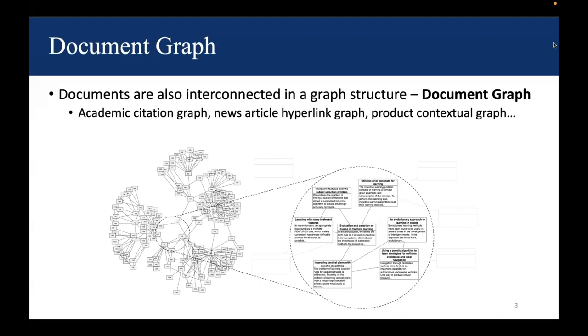Below is an illustration of academic citation graph. Each vertex on the graph is an academic paper, which is a document. If one paper cites the other, we draw a link between them. Similarly, we have news article hyperlink graph and product contextual graph.